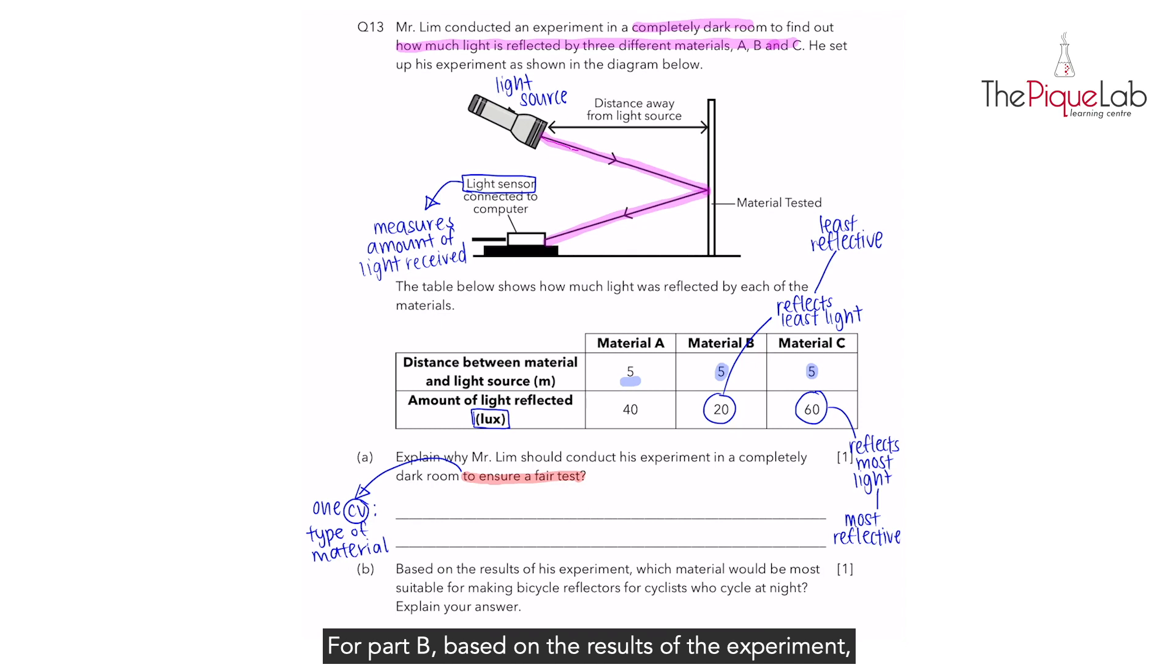For part B, based on the results of the experiment, we need to choose a material that is the most suitable for making bicycle reflectors for cyclists who cycle at night. What are bicycle reflectors? For cyclists who cycle at night, the struggle is that they are not seen easily. It's very difficult to see the cyclists at night. That is why bicycle reflectors are installed on the bikes. Basically, they reflect light into other people's eyes so that the cyclists can be seen easily.